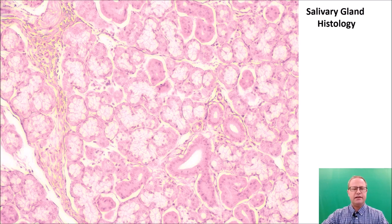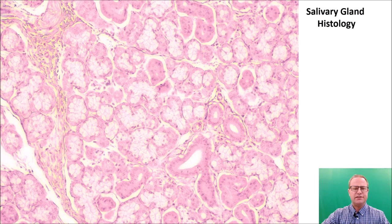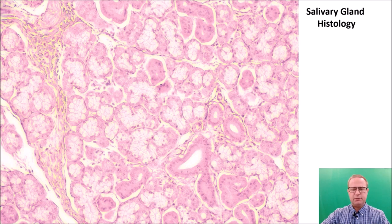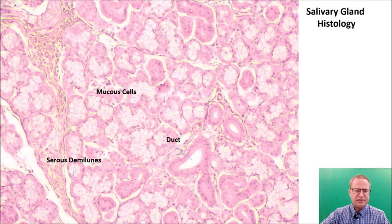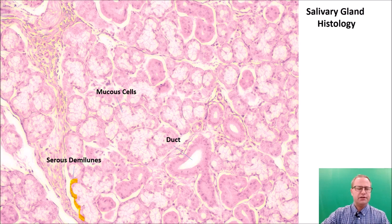Let's look at the accessory glands — the salivary glands. We have three salivary glands: the parotid, the sublingual, and the submandibular. Some secrete primarily mucus; some are mixed glands. We can see obvious ducts where saliva is secreted. Here we can see mucus cells, which secrete mucin that hydrates into mucus. And then we have serous demilunes — 'demilune' means half-moon — which are little half-moon structures that secrete the more watery secretions of saliva.